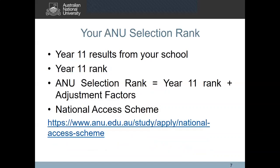Once you have met the co-curricular requirements, we will move on to develop an ANU selection rank for you. We start by developing your year 11 rank, which is calculated using a complex mathematical model that uses your year 11 results and your school's past ATAR performance. If you are completing year 12 in ACT and NSW and completed year 11 in these states, we have access to your results. However, if you are from any other state, you would have to provide your year 11 results in a format which we can use. We recommend you head over to our website to find out more details about the required format.